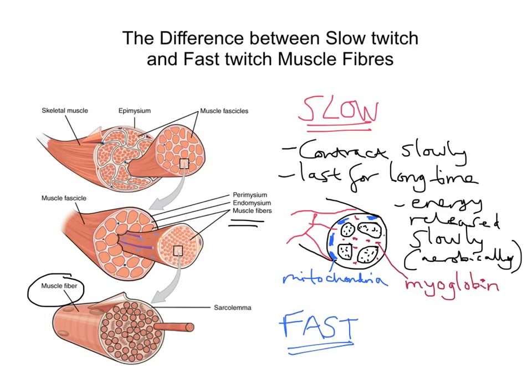As you might guess, fast twitch muscle fibres are kind of the opposite to slow twitch fibres. These fast twitch muscle fibres contract very, very quickly. Because they contract very quickly, they also tire very quickly, making them ideal for short bursts of speed and power — things like sprinting. Slow twitch was good for long distance runners and endurance, whereas fast twitch muscle fibres are ideal for sprinting and short bursts of contraction.